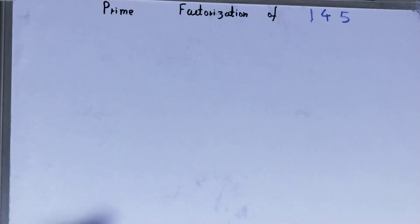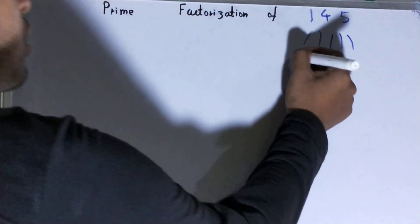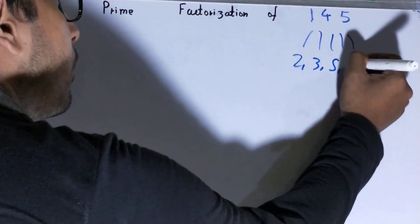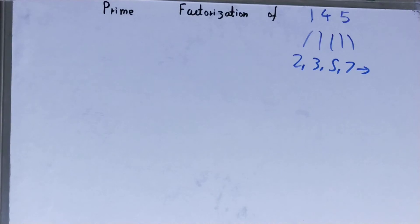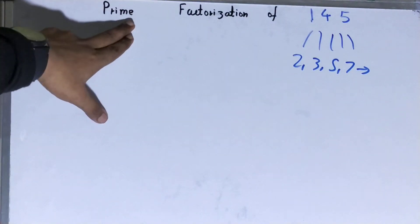That is, we need to factorize this 145 into a group of primes like 2, 3, 5, 7, and so on. Okay, so the process of converting the number into a group of primes is called prime factorization.